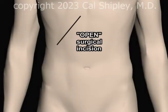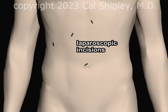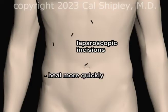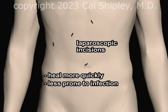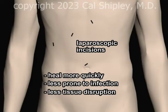Compared to the single large surgical incision required for an open-type gallbladder removal procedure, the laparoscopic approach requires just four small incisions. The smaller incisions associated with the laparoscopic approach heal more quickly, are less prone to infection, and cause less disruption in scarring of abdominal wall tissues, particularly the muscular layers.